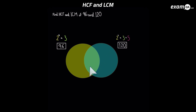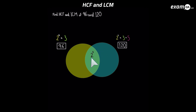Let's begin the Venn diagram. In the middle, we put what is common in both. Both have a two: 96 has two to the power of five, and 120 has two to the power of three. Two to the power of three is common in both, because two to the power of five contains two to the power of three. So we put two cubed in the middle. 96 has extra twos beyond that — specifically two to the power of two — so that goes solely in the 96 side.